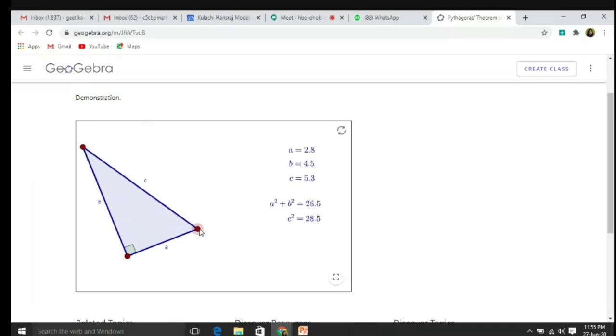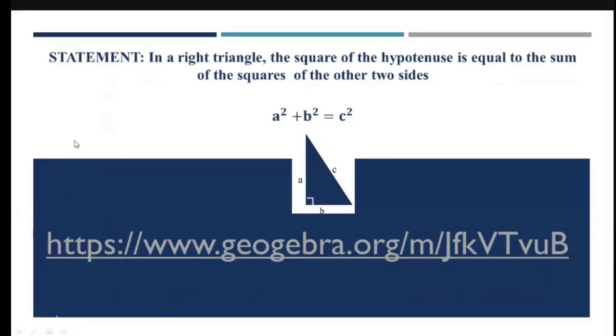See here I am changing the dimensions of the A side. Then always for sure A² + B² will be equal to C². A² + B² will come out to be equal to C². No matter whatever be the sides of the right angle triangle, always we will have this result. We will prove this through this activity.